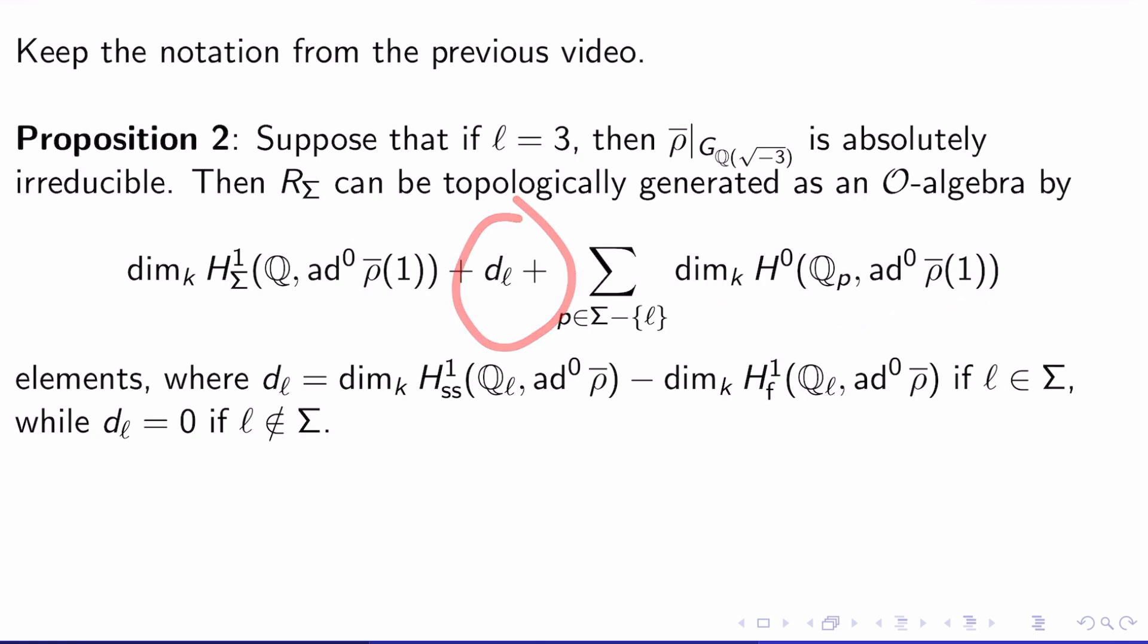Where what is this d_l here? It's dim_k of the semi-simple classes H^1_ss(Q_l, ad^0 ρ̄) minus dim_k of the flat classes H^1_f(Q_l, ad^0 ρ̄). That's what d_l is if l is in Σ. Otherwise d_l is just 0 if l isn't in Σ.